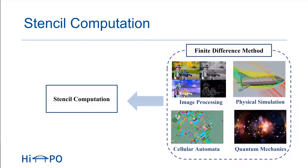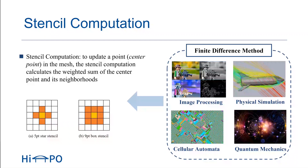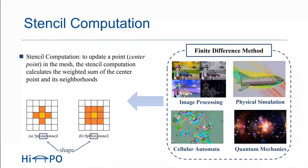Stencil computation is one of the well-known computation patterns derived from the finite point method, which is widely used in various scientific applications. To update a point called the center point in the mesh, the stencil computation calculates the weighted sum of the center point and its neighbors. Figure A and Figure B show a five-point star stencil and nine-point box stencil respectively, where the star and box are the shape of the stencil, and the distance between the center point and its nearest neighbor is denoted as the radius of the stencil.